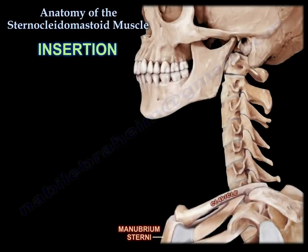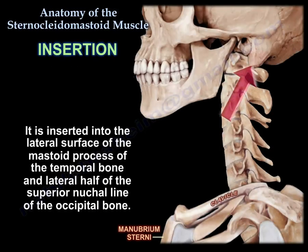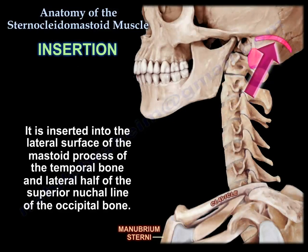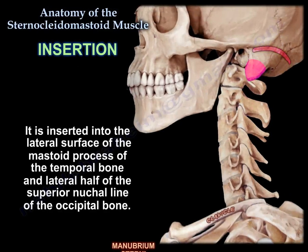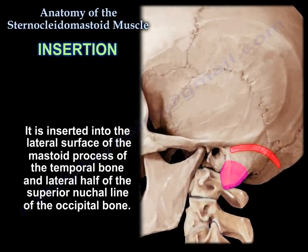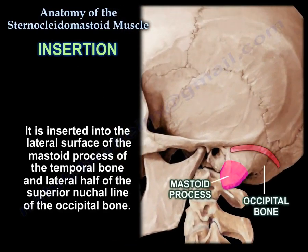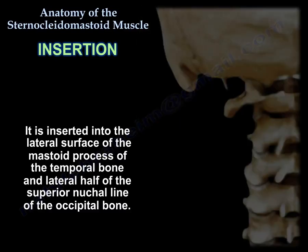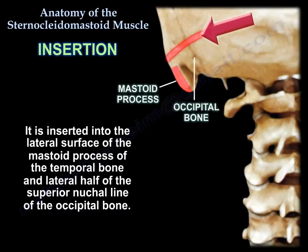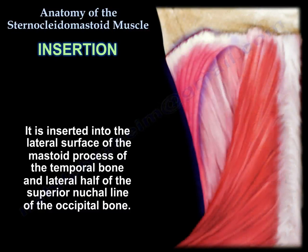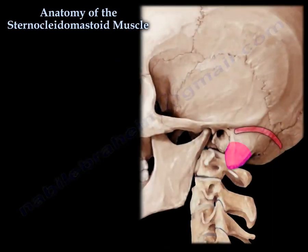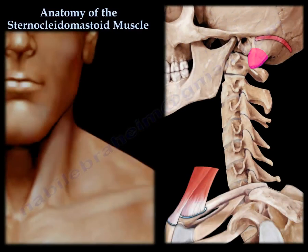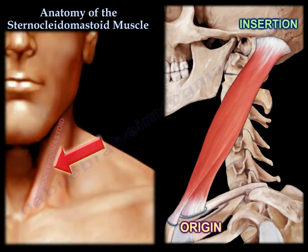The insertion. It is inserted into the lateral surface of the mastoid process of the temporal bone and the lateral half of the superior nuchal line of the occipital bone, as you can see here in this diagram. Here is the muscle from origin to insertion.